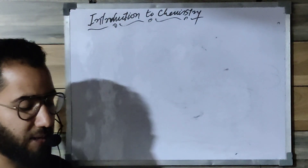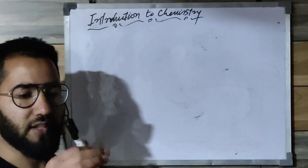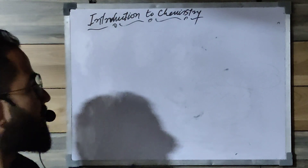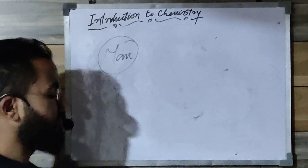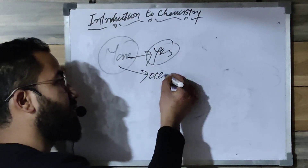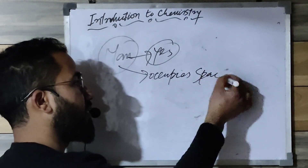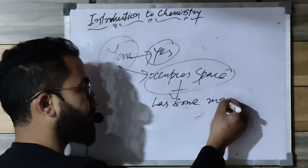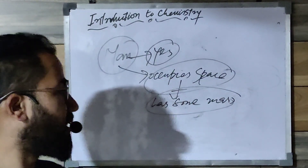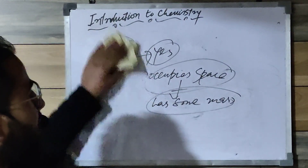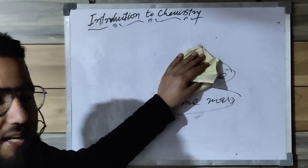Anything which has mass and occupies space — so this marker, can you say it's matter? Yes, because it's occupying some space and if you weigh it, it has some mass. Is man matter or not? Yes, because man occupies space and has some mass as well. So man is matter — anything and everything comes under that.